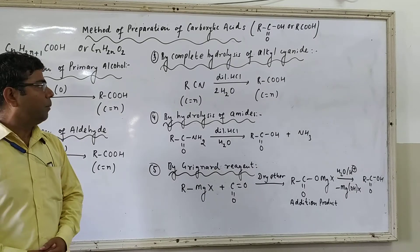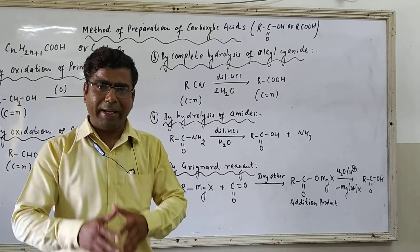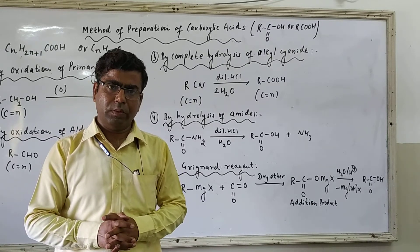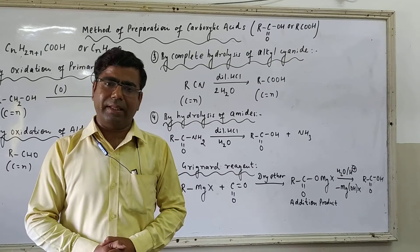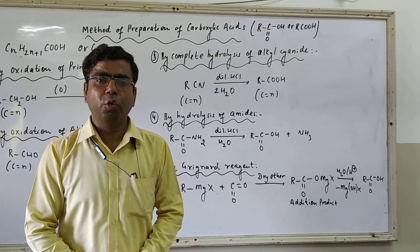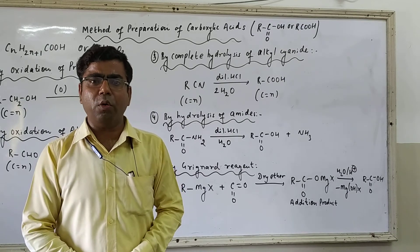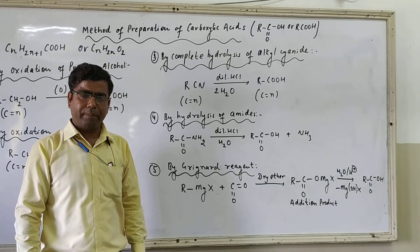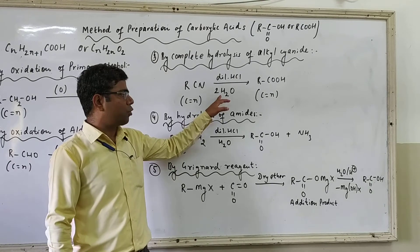The third method is by the complete hydrolysis of alkyl cyanides. Please remember this very useful concept: the CN group on complete hydrolysis gets converted to COOH. This complete hydrolysis takes place in the presence of dilute acid or dilute alkali, where the CN molecule utilizes two molecules of water. By utilizing two molecules of water, the CN group is directly converted to COOH. So on complete hydrolysis, RCN (cyanides) gets converted to RCOOH.